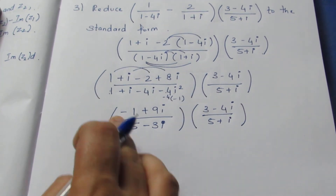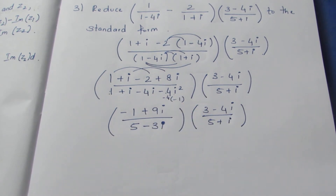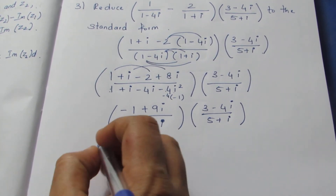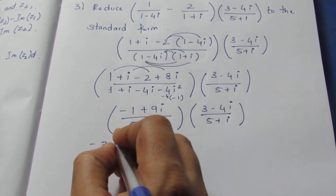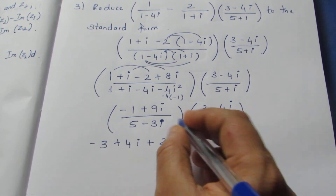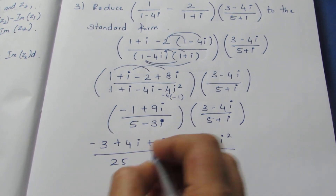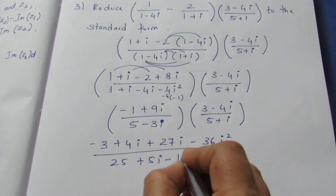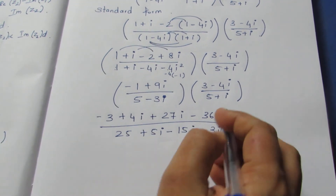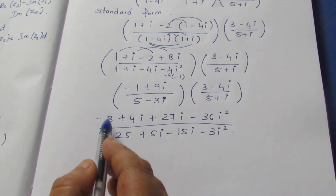The expression is in binomial form so we need to multiply the numerator with the numerator. Multiplying −1 with both terms and +9i with both terms, same way for the denominator. If I multiply −1 × 3 I get −3, then +4i. Then 9×3 = 27, so 27i, minus 9×4 = 36i². On the denominator side: 5×5=25, plus 5i. Multiplying further: −15i minus 3i². Substituting i²=−1, it becomes +36 and +3.